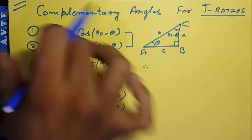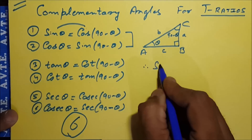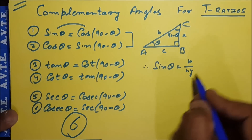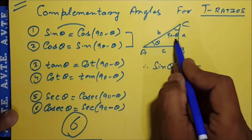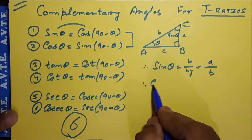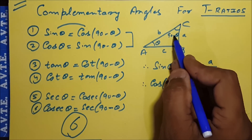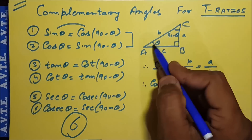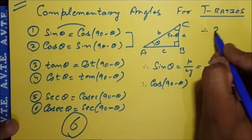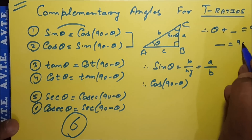Now we have to verify whether these formulas are equal or not. What is sine theta? Sine theta is perpendicular upon hypotenuse — for angle theta, the perpendicular is side A and the hypotenuse is side B. Now we have to find cos(90 minus theta). This is also one of the acute angles because these two angles are complementary. Complementary angles are those whose sum is 90 degrees, so if one angle is theta, the other is 90 minus theta.